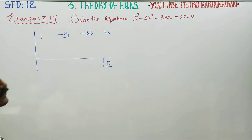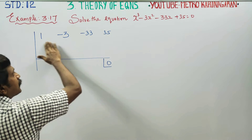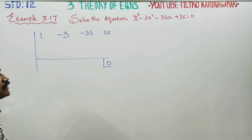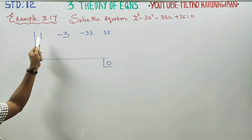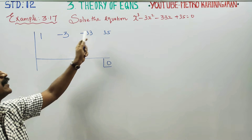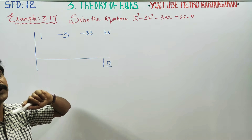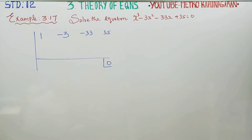There are clues for the try-and-error method. Clue 1: if you add all the coefficients and the sum equals zero, you can use +1. Clue 2: if the alternate terms — first and third added equal the second and fourth added — then you can use -1.